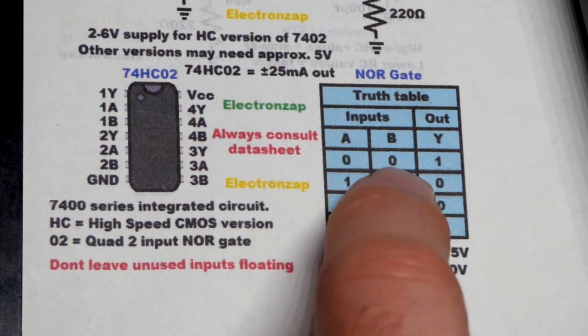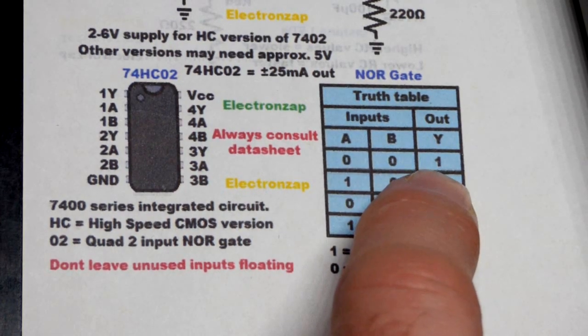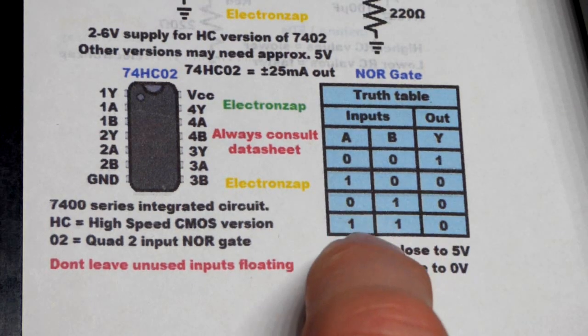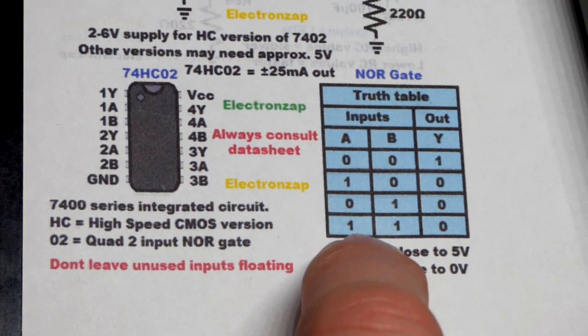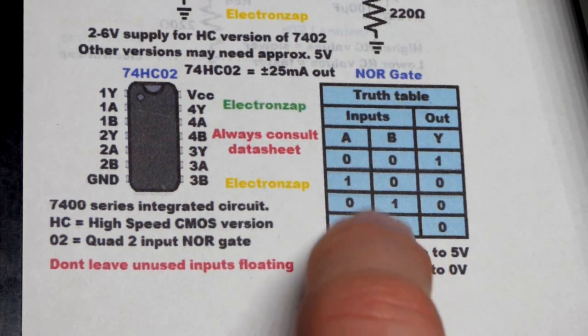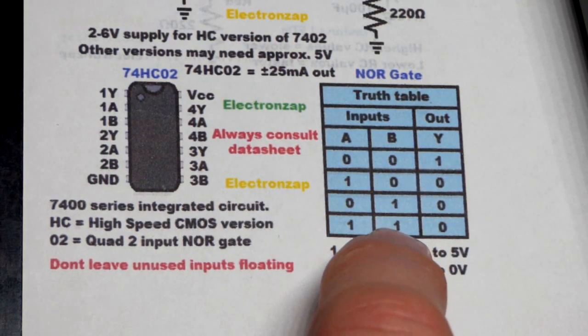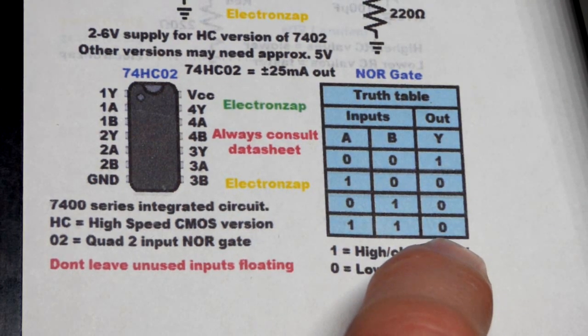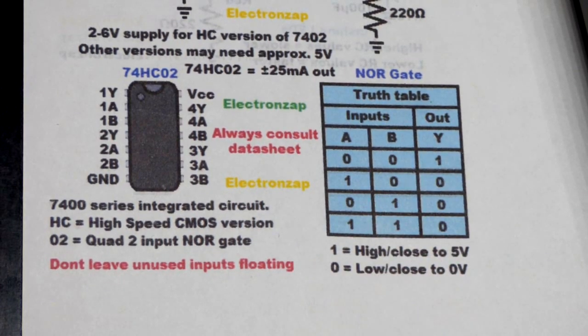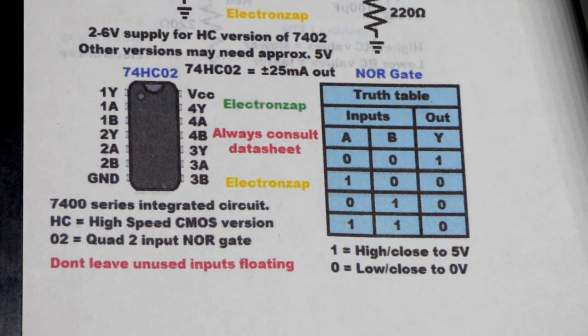We got the truth table there. As we saw, both inputs low, the output's high. That's the opposite of the OR gate - that's what a NOR gate is. It's not OR, or inverted OR. If one or both - doesn't matter in this case - but as long as at least one input is high, then the output is low. Again, the opposite of the OR gate.